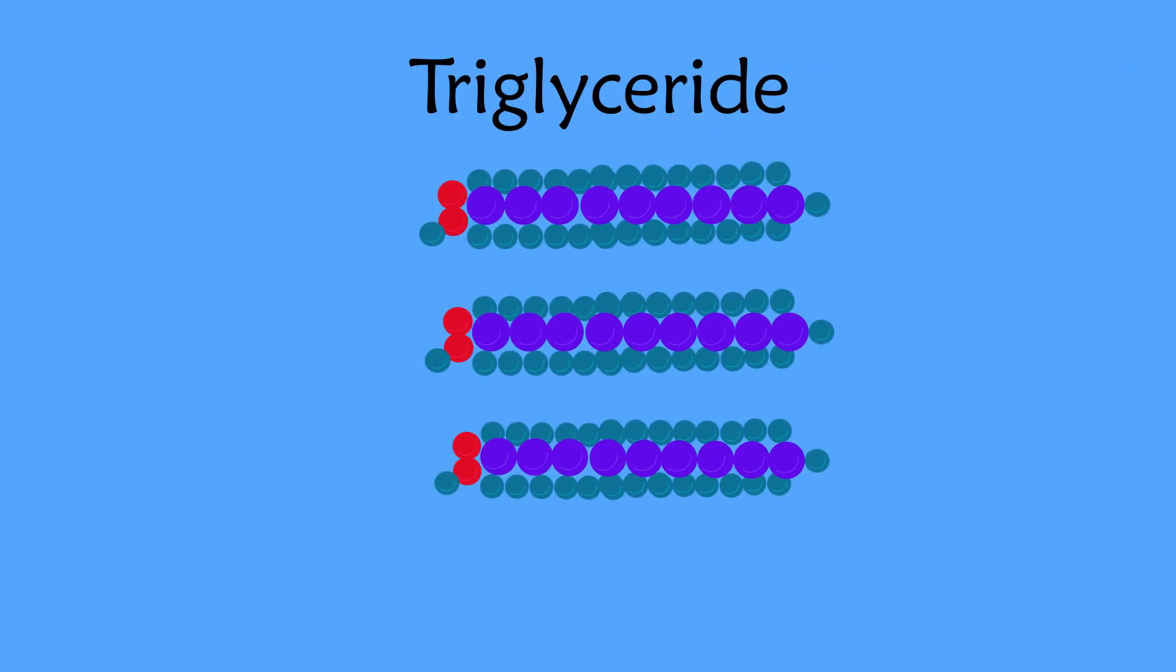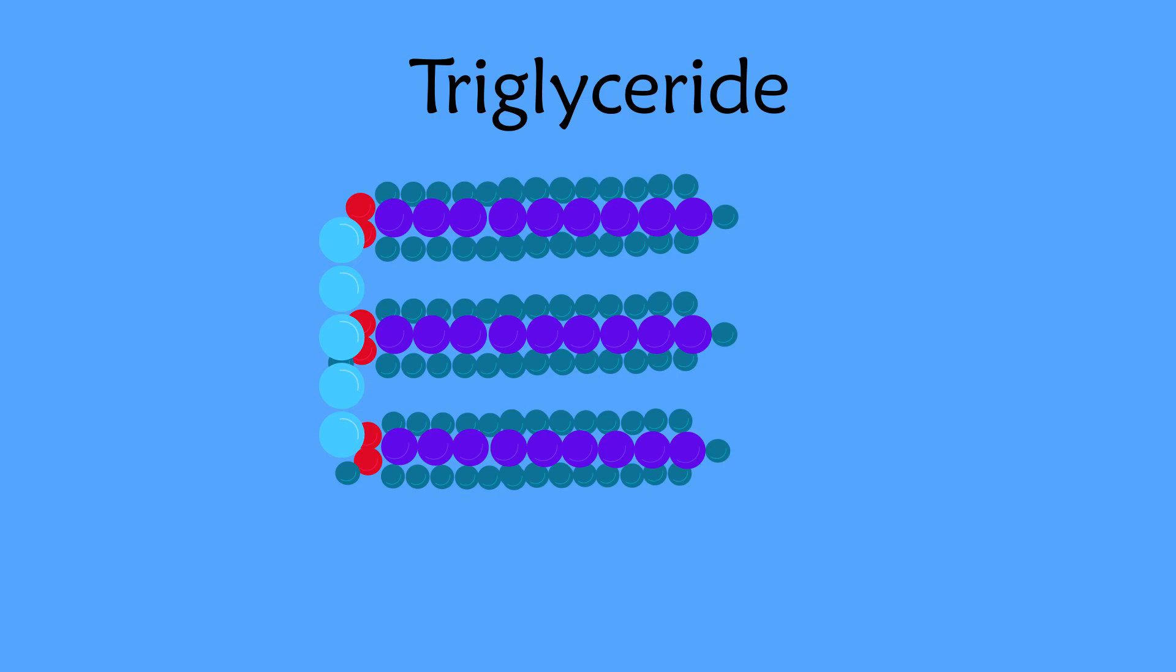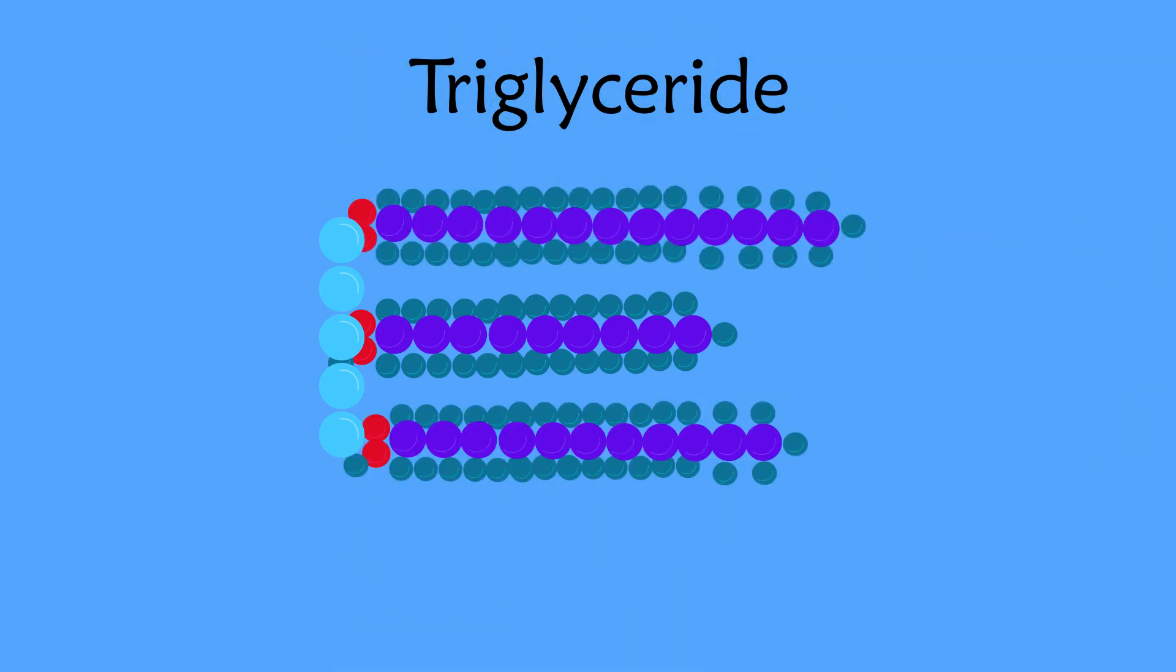A triglyceride is a molecule made up of three fatty acids attached to a glycerol backbone. The three fatty acids on each molecule could be the same or they could be different. The fatty acid makeup of the oil or fat is responsible for some of the properties found in the resulting biodiesel.